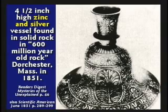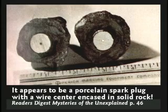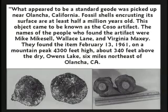This zinc and silver vessel was found in solid rock supposed to be 600 million years old — this is pre-flood, not pre-Cambrian. What appears to be a spark plug was found encased in solid rock in California. From Reader's Digest, 'Mysteries Unexplained' — in Olancha, California, at Owens Lake, they found what looked like a geode. When they broke it open, it looked like a spark plug inside, so they x-rayed it.